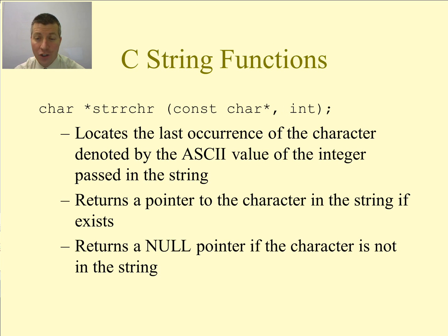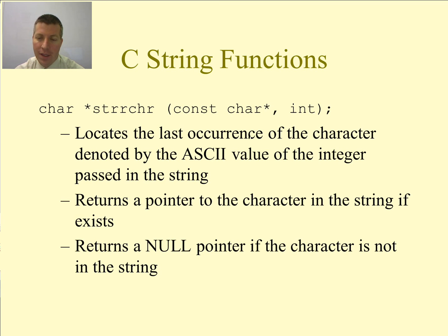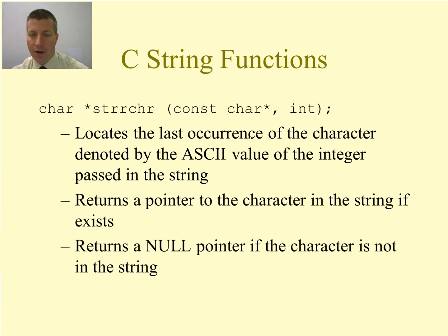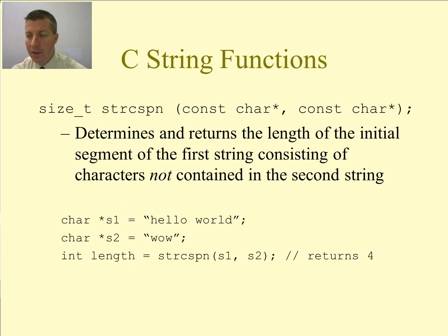The strrchr function looks exactly the same — it's just got an extra 'r' in there. It locates the last occurrence of the character denoted by that ASCII value, and returns a pointer to the character in the string if it exists. It returns a pointer to the last occurrence rather than the first — kind of a neat function that goes all the way to the end and then comes backwards.